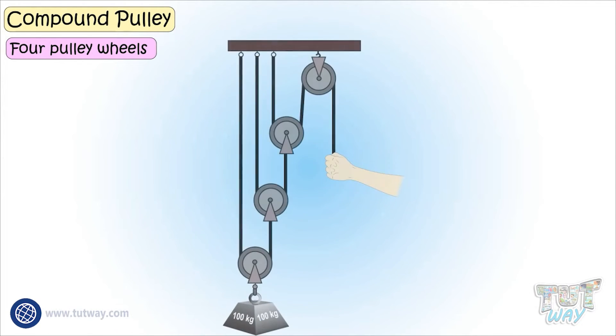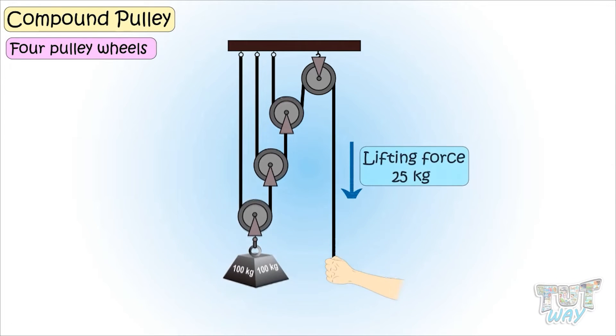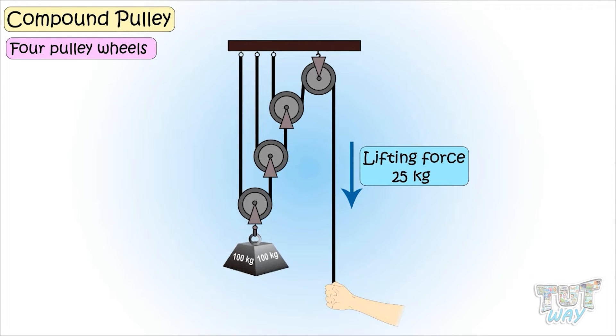Now we have a compound pulley with four pulley wheels. Here 100 kg weight is equally supported by four pulleys and an even longer rope. This means you can lift it by pulling with a force of just 25 kg, that is one fourth of the force otherwise required.